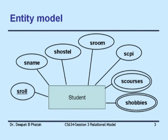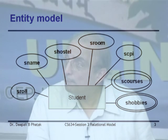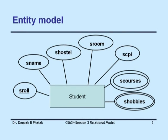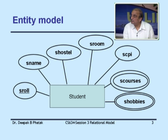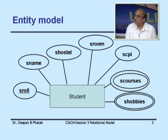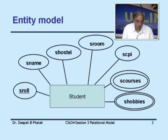Using ellipses we define attributes associated with each student entity: name, hostel, room, CPI, and roll number. Notice the naming convention — S-role, S-name — to signify student roll number and student name. Two attributes are shown by double ellipses, while others have single ellipses. Single ellipses indicate single-valued attributes: exactly one name, one hostel, one room. However, a student may register for many courses and have multiple hobbies. The underline on S-role means it is unique for each student — the primary key.